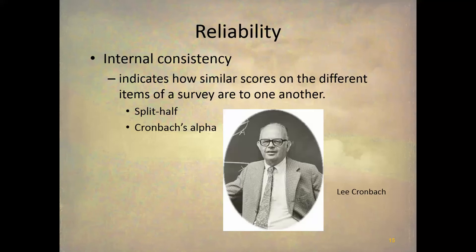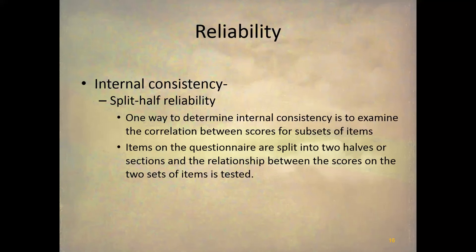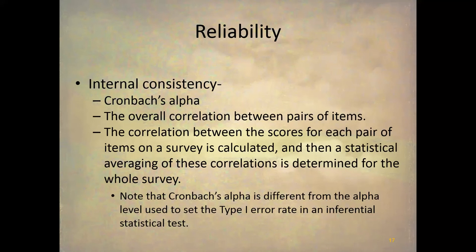There are two general ways we calculate internal consistency. One is the split-half method, and the other is calculating Cronbach's Alpha. In the split-half method, we literally split the test in half — if the test has 20 questions, we look at the first 10 and the second 10, treat those as two different tests, and correlate them. If it's reliable, the two halves should correlate well. Cronbach's Alpha is totally statistical: it looks at the overall correlation of pairs of items on the test, compares that to the overall variance of the test, and gives you a level of internal consistency. Note that this is not the same as the alpha level in statistical testing.